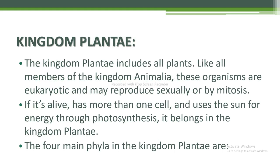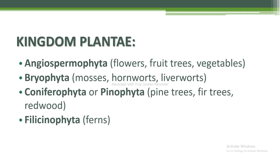Next is kingdom Plantae. Kingdom Plantae includes all plants — eukaryotic organisms that may produce sexually by mitosis. If it's alive, has more than one cell, and uses the sun for energy through photosynthesis to prepare its own food, it belongs in kingdom Plantae. The four main phyla are: Angiospermophyta (flowers, fruit trees, vegetables); Bryophyta (mosses, hornworts, liverworts); Coniferophyta, also known as Pinophyta (pine trees, fir trees, redwood); and Filcinophyta (ferns).